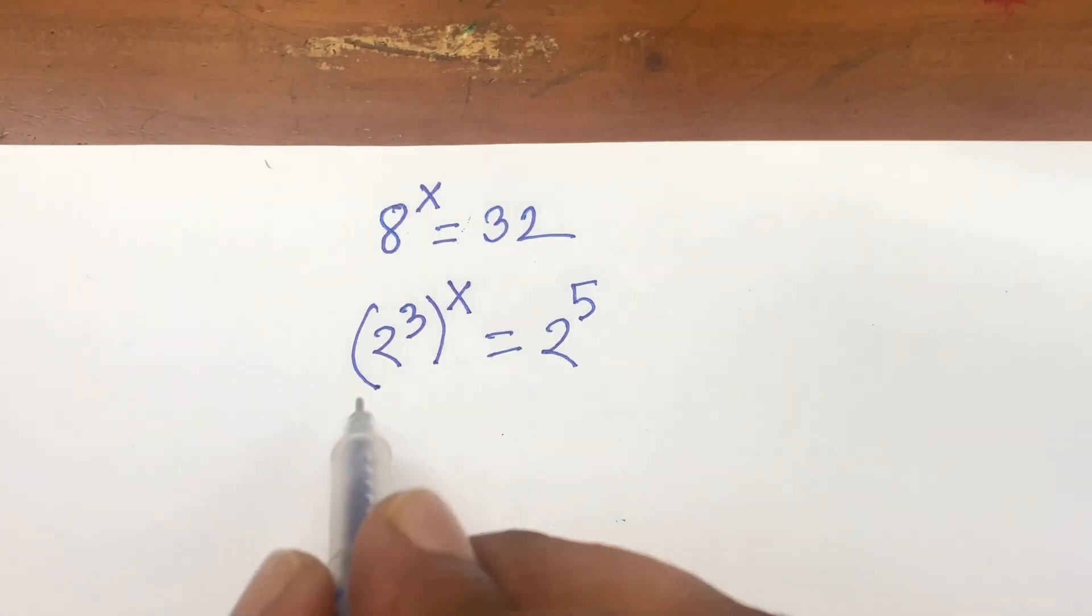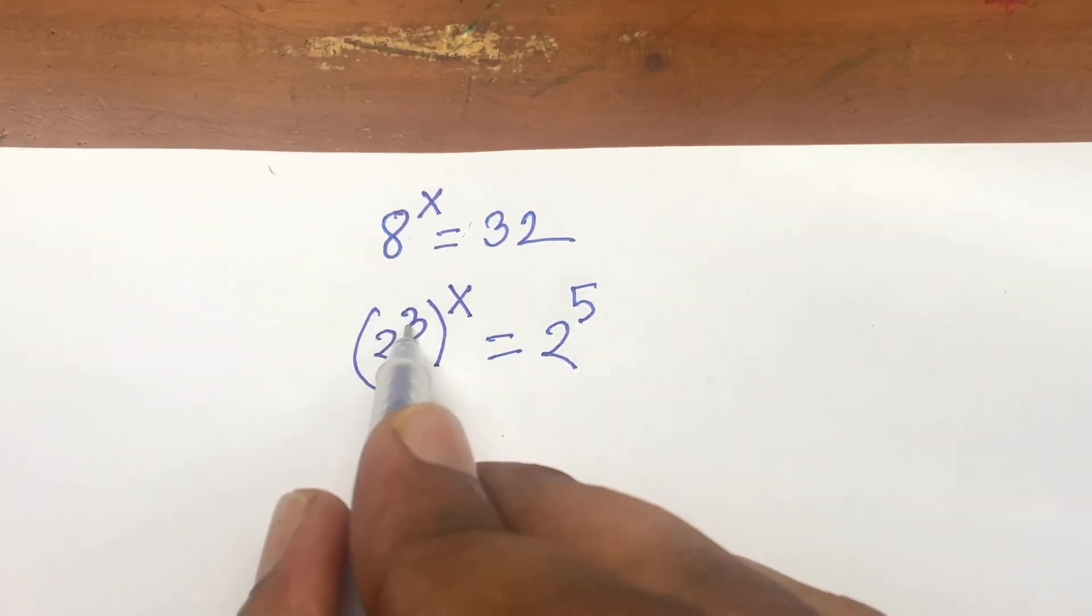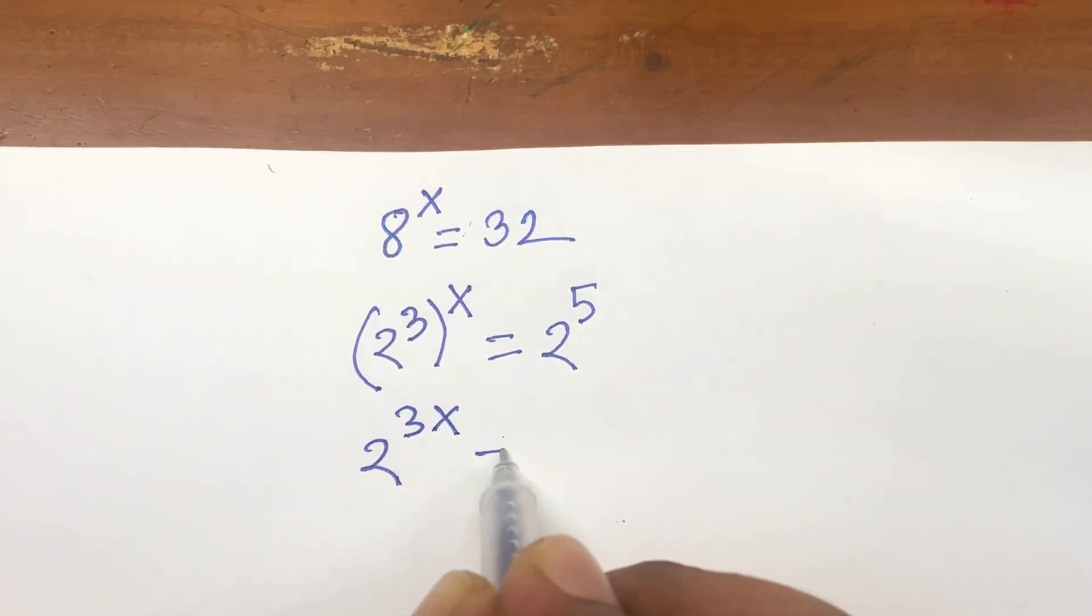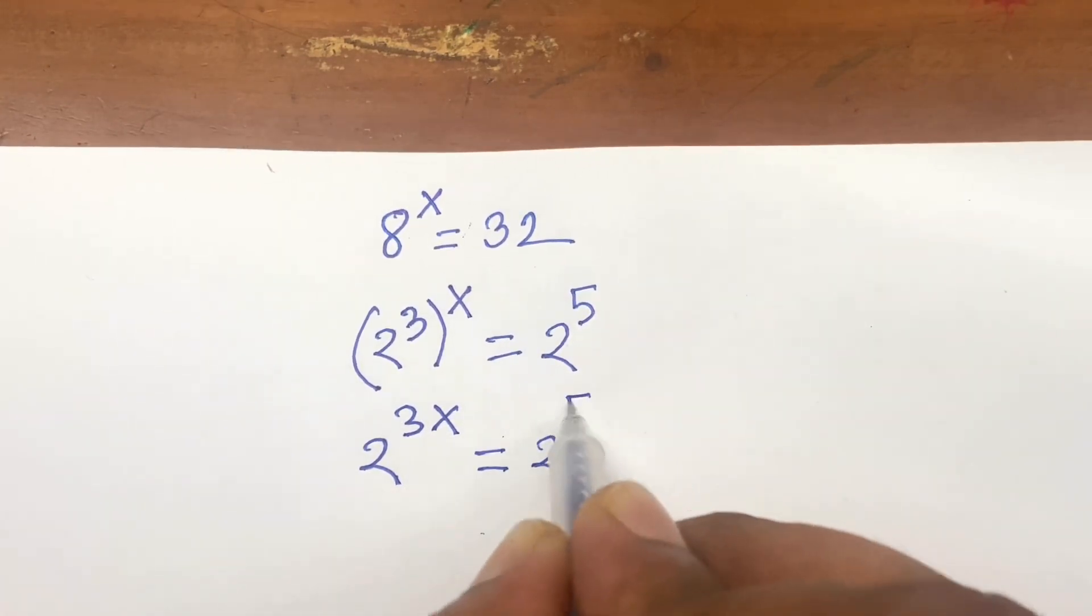Now I can say here is 2 to the power 3 times x is equal to 3x is equal to 2 to the power 5.